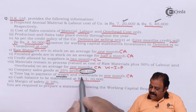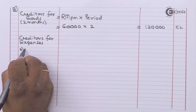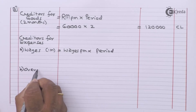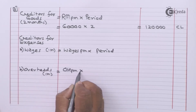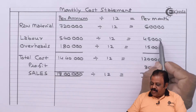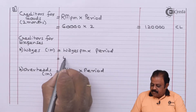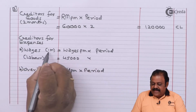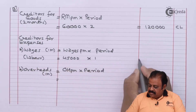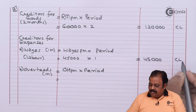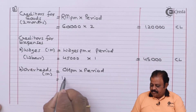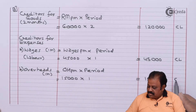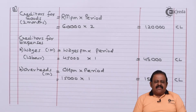Time lag in payment of wages and overheads is one month. Wages per month forty-five thousand, outstanding period one month — equals forty-five thousand, current liability. Overheads per month fifteen thousand, outstanding period one month — equals fifteen thousand, current liability. So we have calculated all required current assets and current liabilities.